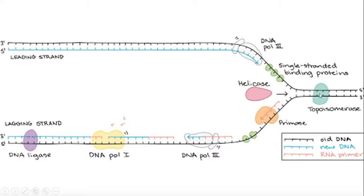Helicase enzyme ke darmiyaan hydrogen bonds ko todkar dono strands ko alag kar leta hai. Yahan single-stranded binding (SSB) proteins judh jaati hain, taaki yeh dono strands dobara na judh jayein. Replication bubble aur replication fork ban jaata hai. SSB proteins ek ek strand ke saath attach ho jaati hain taaki DNA dobara na judhe.